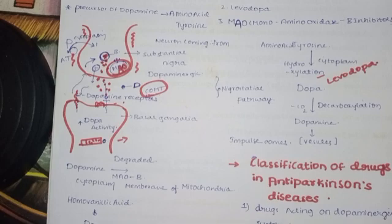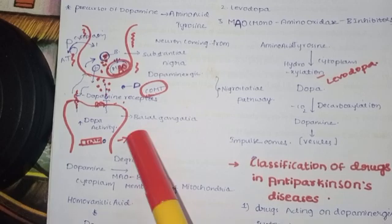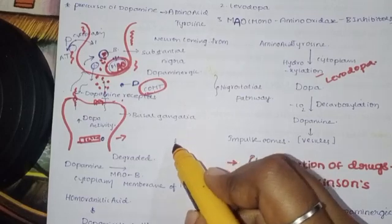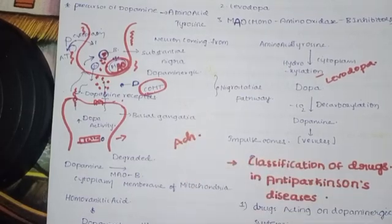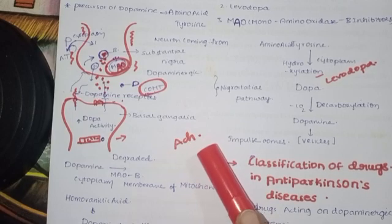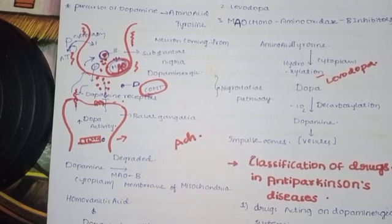The body tries to stay stable and maintain equilibrium between dopamine and cholinergic activity. If dopamine is low, cholinergic activity rises. You can inhibit ACh activity to restore the balance.